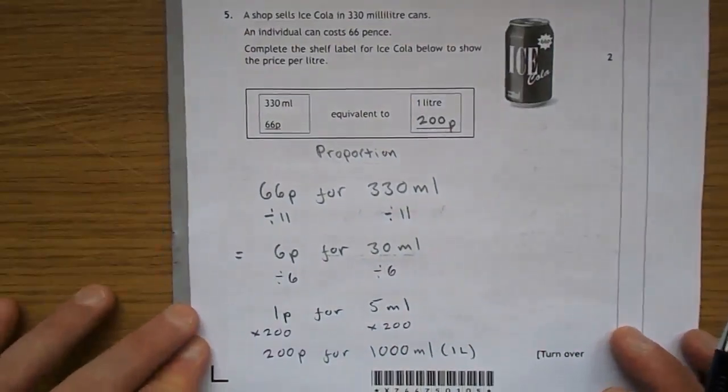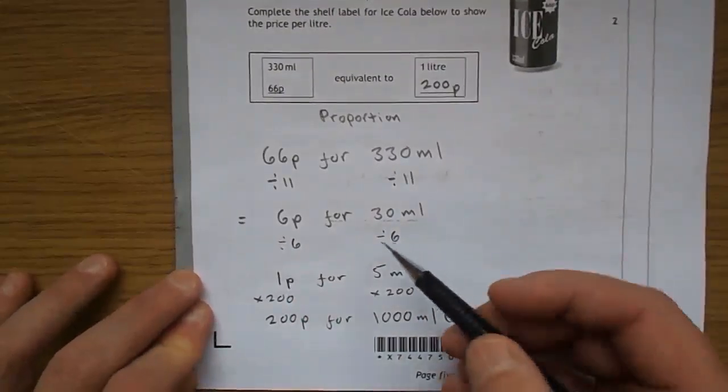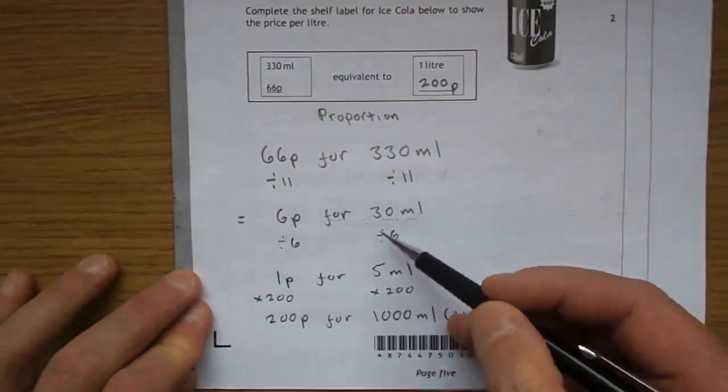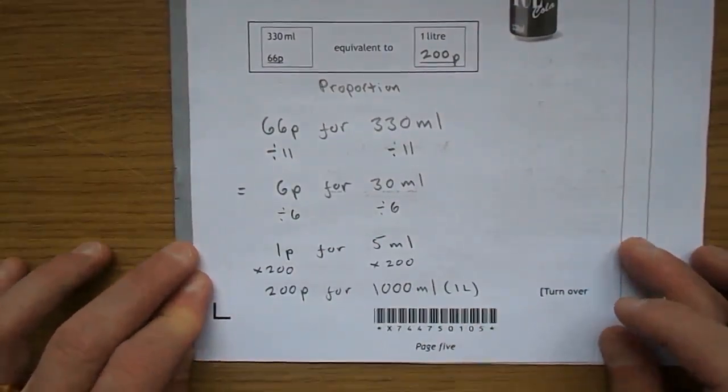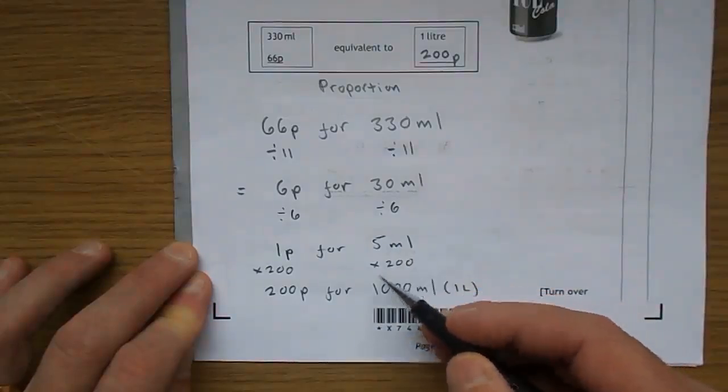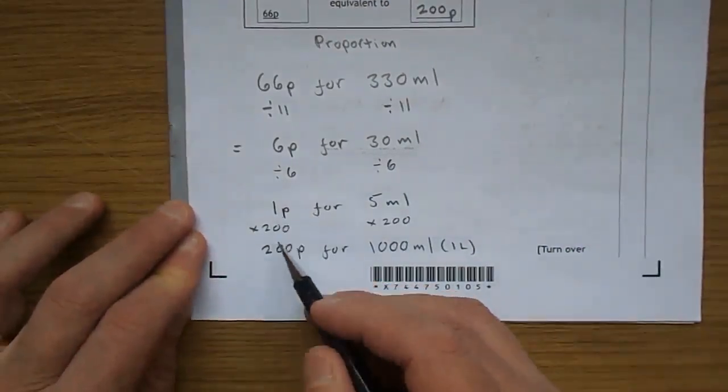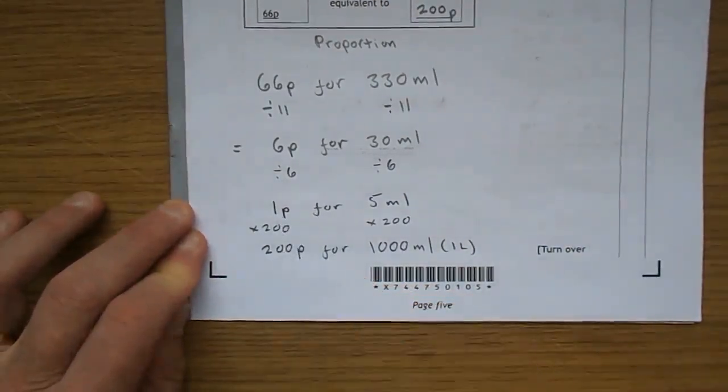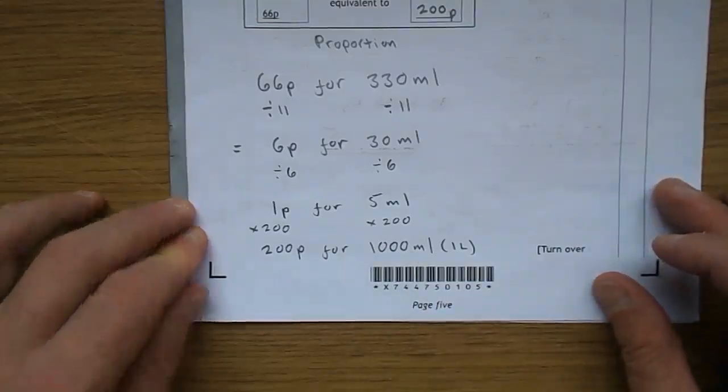6p for 30 mils, divided by 6 again, that means 1 pence for 5 mils. Times that by 200 because we want 1000 millilitres, that's a litre. Times that by 200 of course, you get 200 pence for 1000 millilitres, which is a litre.